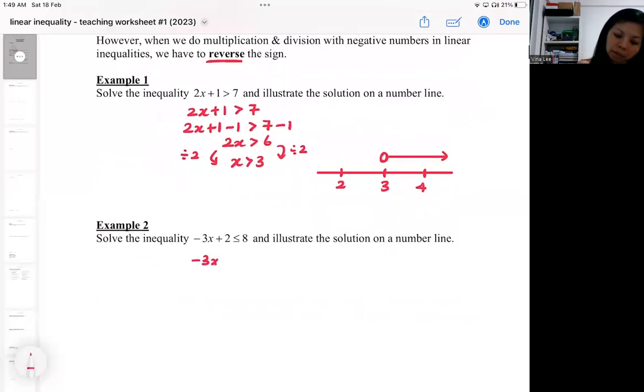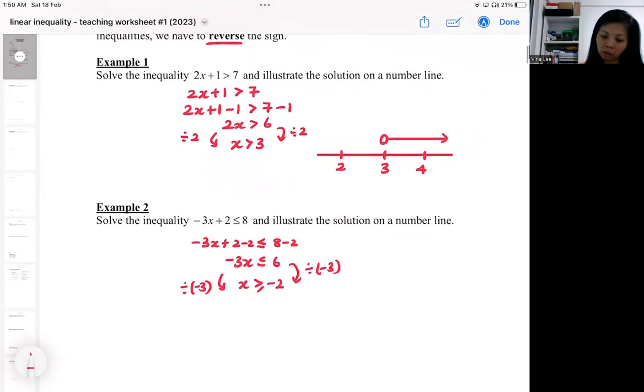Minus 3X plus 2, I'm going to minus 2 on both sides. I must get to 1X. When you solve inequality, you always go to 1X. So in this case, I'm dividing by a negative number, so that's why I should reverse and flip around the inequality sign.